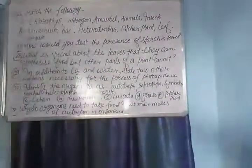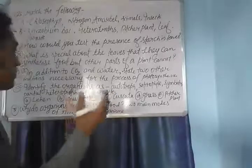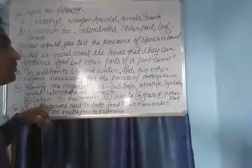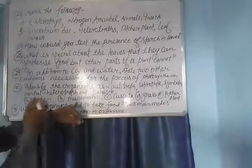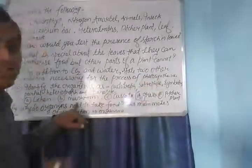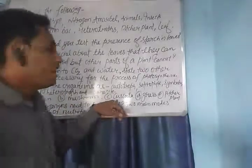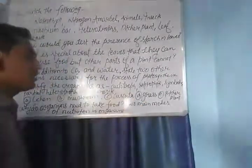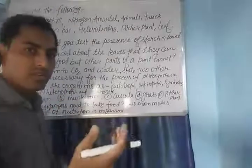Question number 30: Identify the organism as autotroph, saprotrophyte, symbiotic, partial heterotroph and parasite. Lichen is related to symbiotic. Mushroom is related to saprotrophyte — it gets food from dead organisms. Cuscuta is a parasitic plant — parasite. Grass is an autotroph. And pitcher plant is a partial heterotroph, as it traps insects for getting protein.